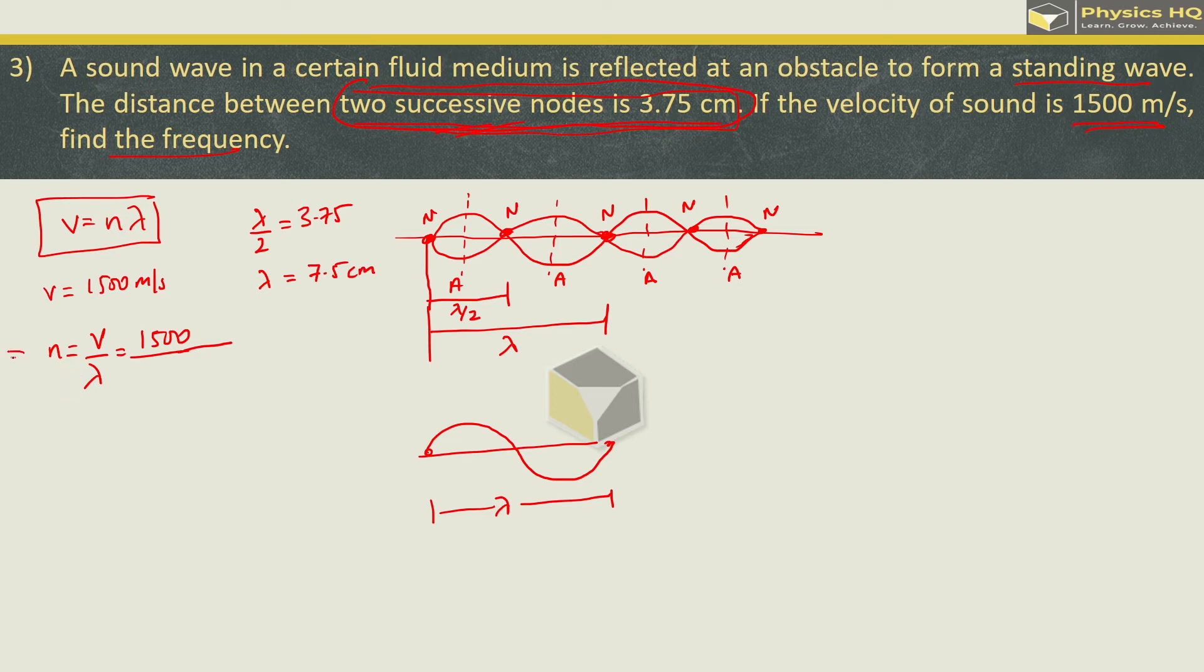Put this in the frequency formula. So we have 7.5 centimeter we'll convert to meter, 10 raise to minus 2 multiply. So this is 7.5 and with this two zeros. So we got 200 into 10 raise to minus 2 goes up, so 10 raise to 2. So we got 20,000 hertz as the frequency. You can write this as 20 kilohertz.